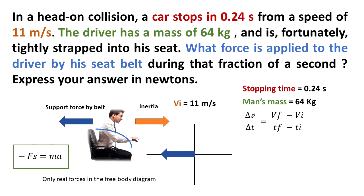We know that our final velocity is zero meters per second because the person is going to stop, and the initial velocity is 11 meters per second. That was the same velocity of the car.